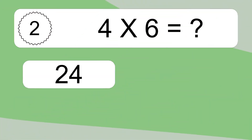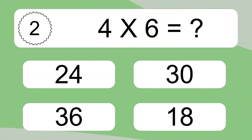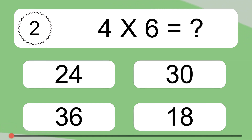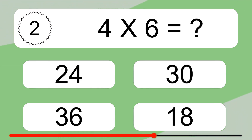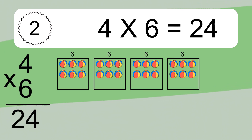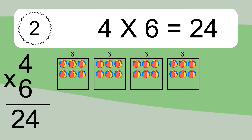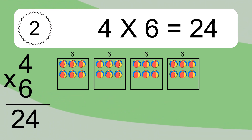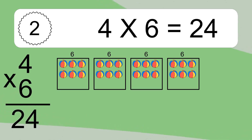4 times 6 equals what? 4 times 6 equals 24. We have 4 boxes, and each box has 6 colorful balls inside. If you count all the balls in all the boxes together, you will have 4 times 6 balls. This equals 24 balls.